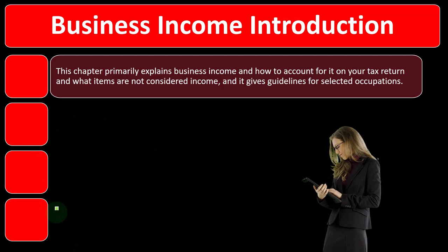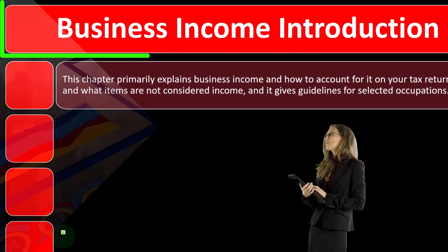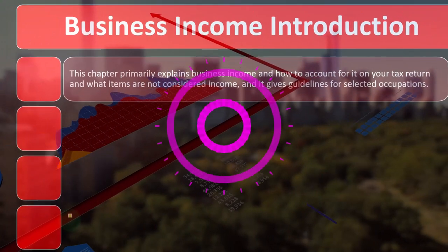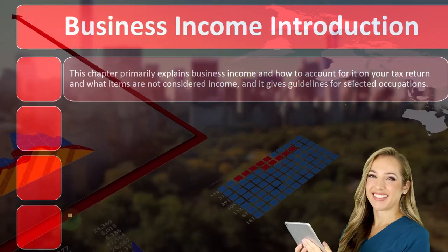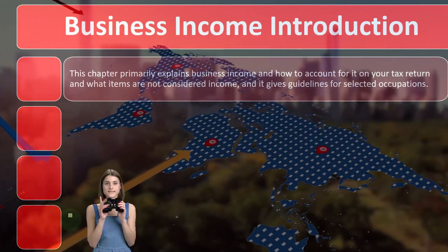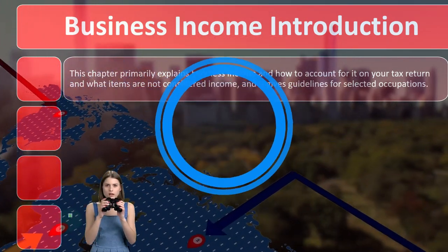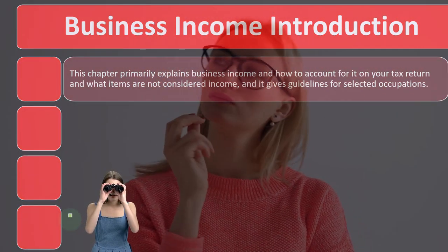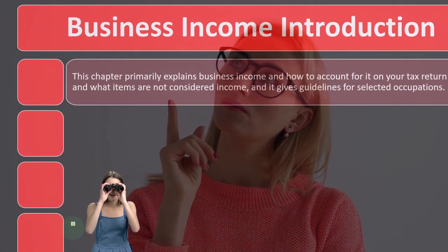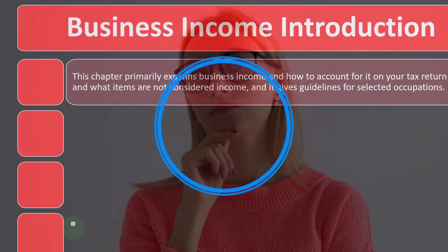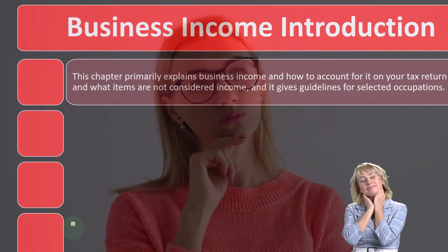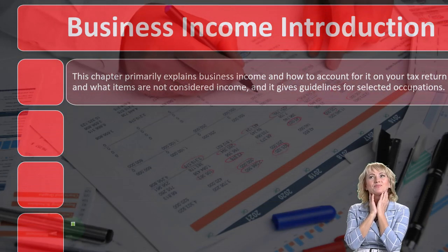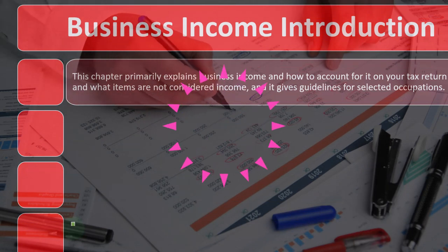Let's focus on the income side of things — business income. Remember the general rule for income from the IRS's perspective: anything you get is basically income unless the IRS has an exception saying it's not. So when thinking about business income, the questions are: is this income? Is it exempt from reporting? And if it is income, where do I have to report it — on Schedule C or somewhere else on Form 1040 or some other form or schedule?